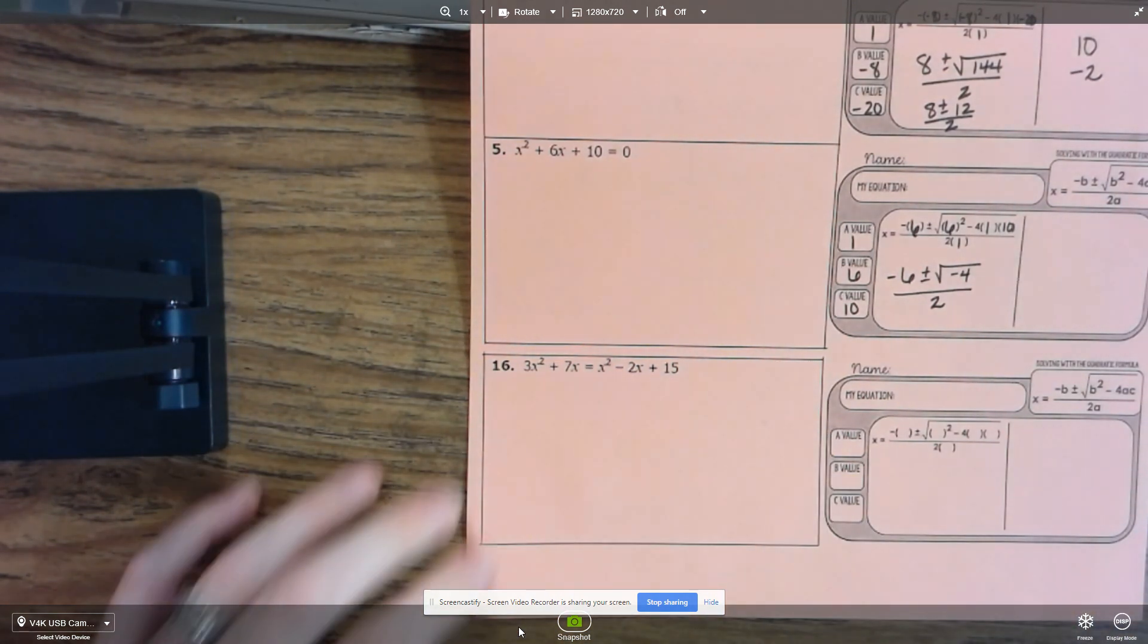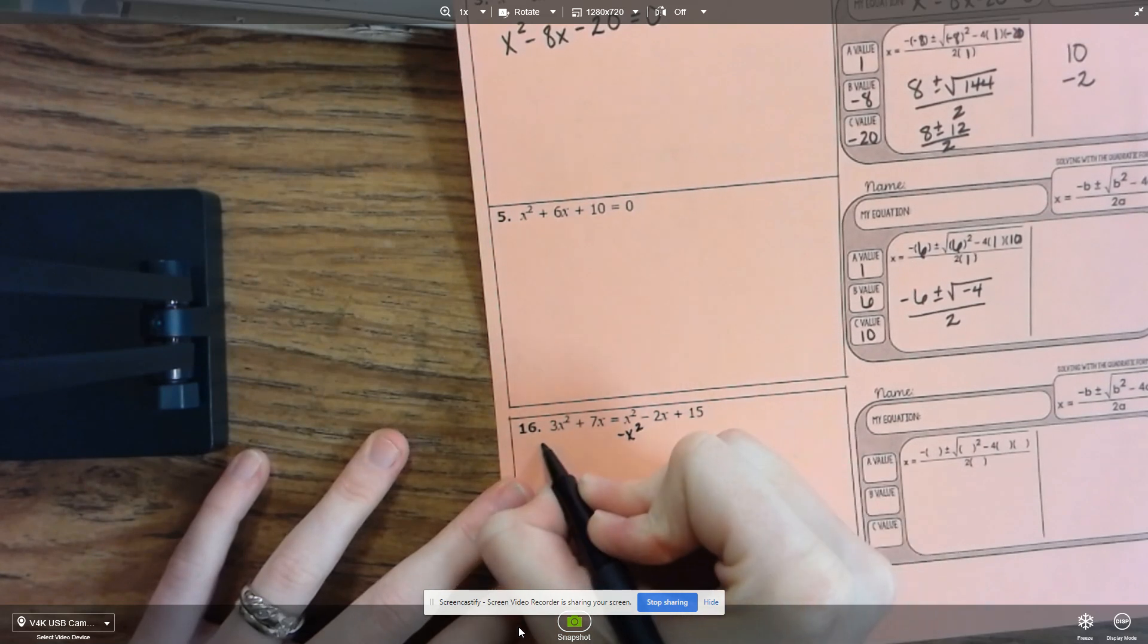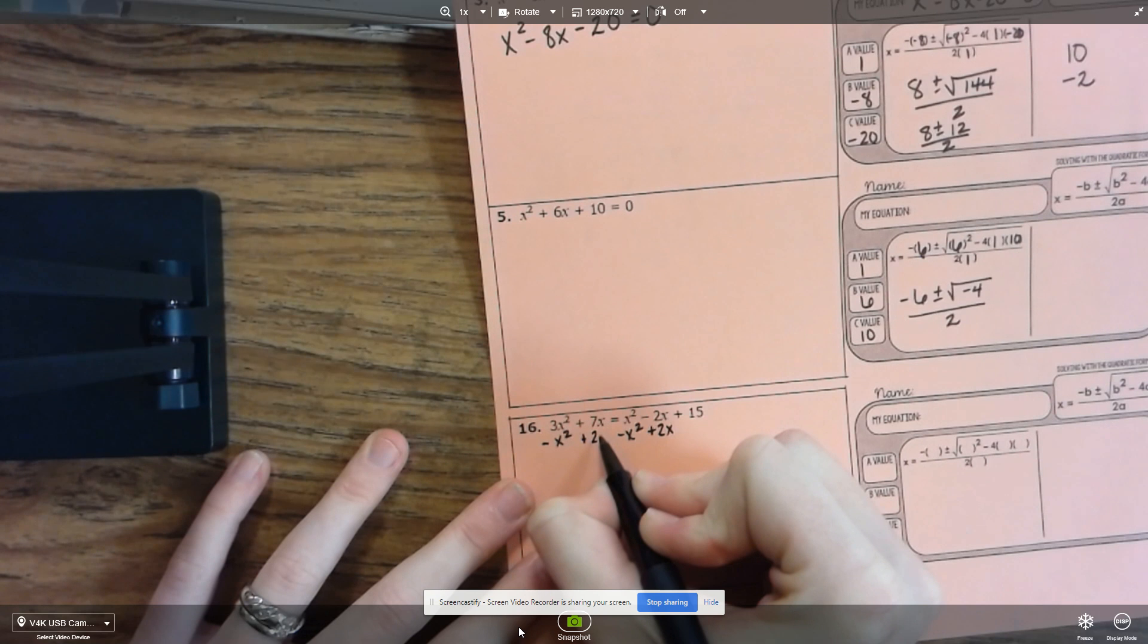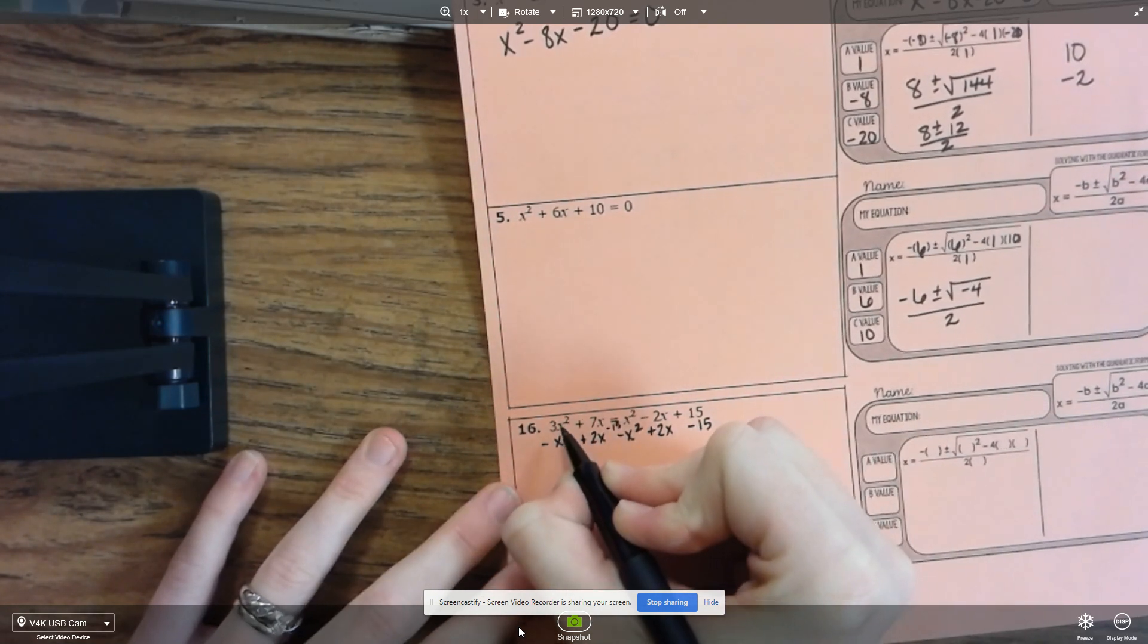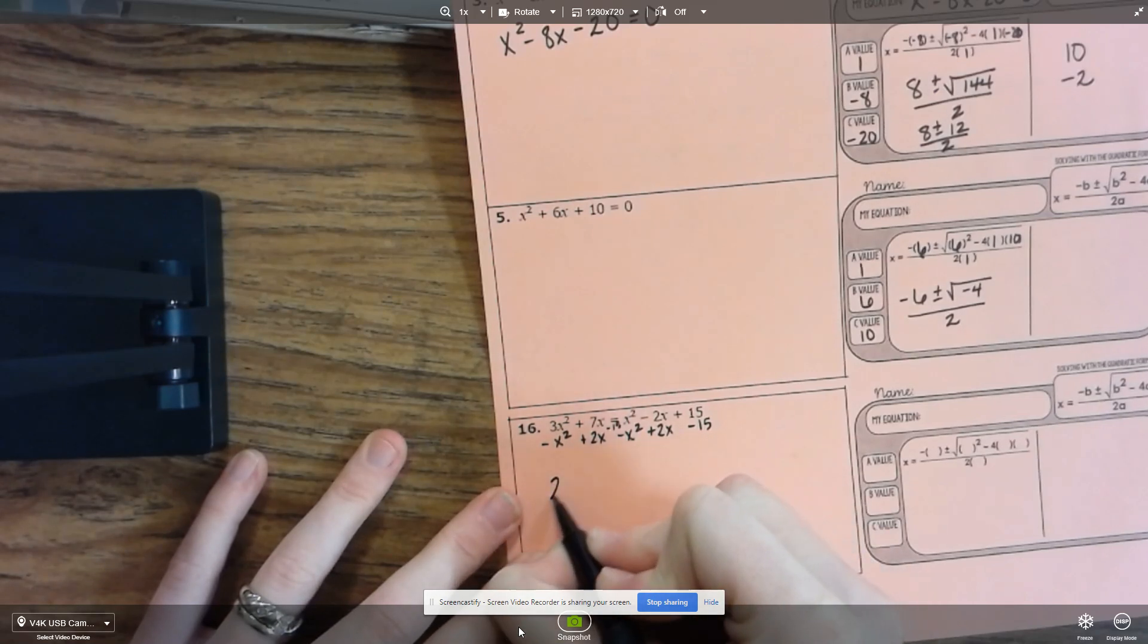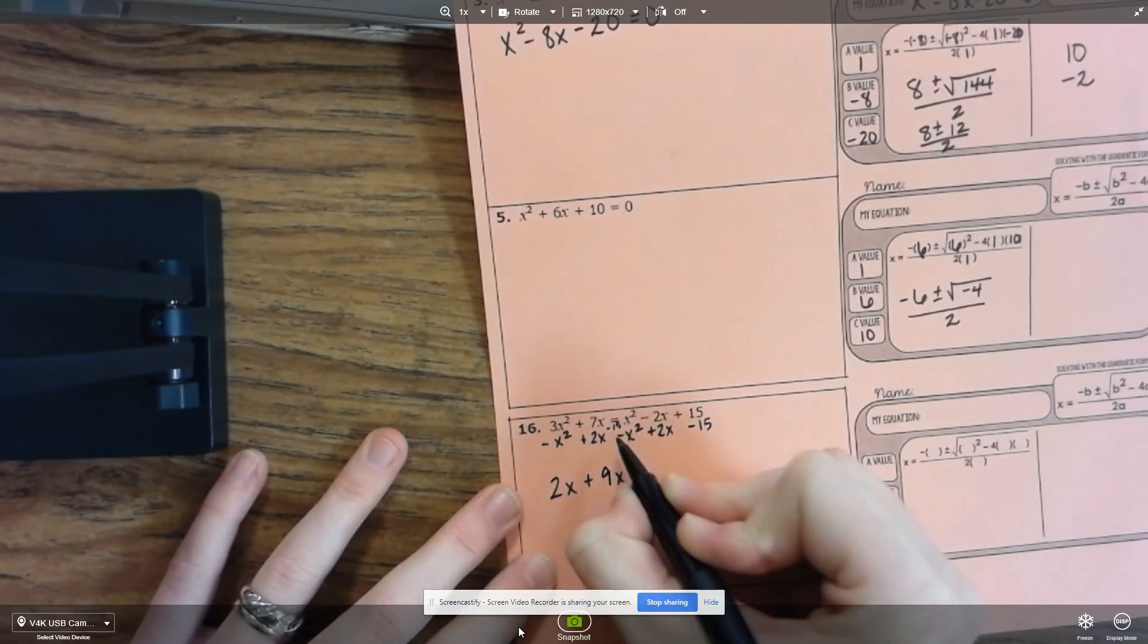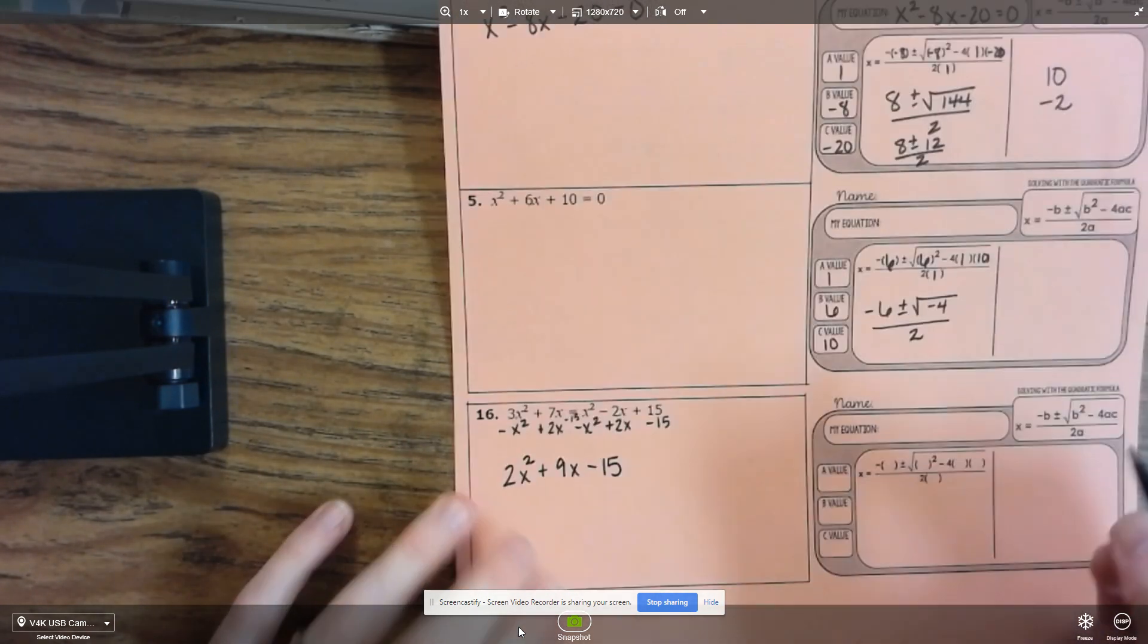And then our last one. So we've got a lot of moving to do here. So I'm going to subtract the x squared from both sides, add the 2x to both sides, and then subtract a 15 from both sides. So 3x squared minus x squared is 2x squared, 7x plus 2x is 9x, and then minus 15.